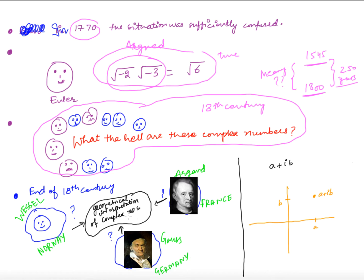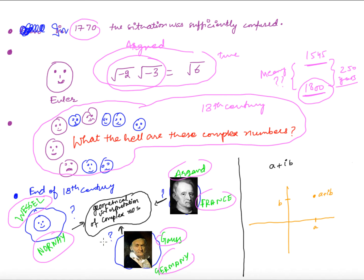At the end of the 18th century, three different people sitting in different parts of the world — Wessel in Norway, Argand in France, and Gauss in Germany — all independently had the same imagination. They said that a complex number of the form a + ib, where a and b are real and i is the square root of minus one, can be thought of as a point in the xy-plane with Cartesian coordinates (a, b).